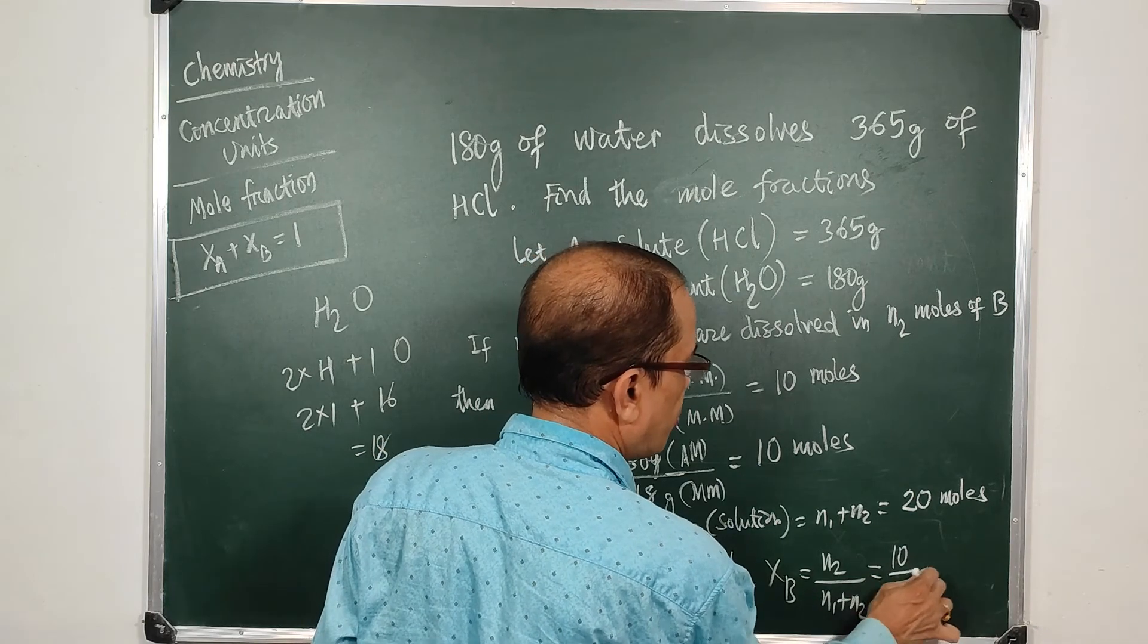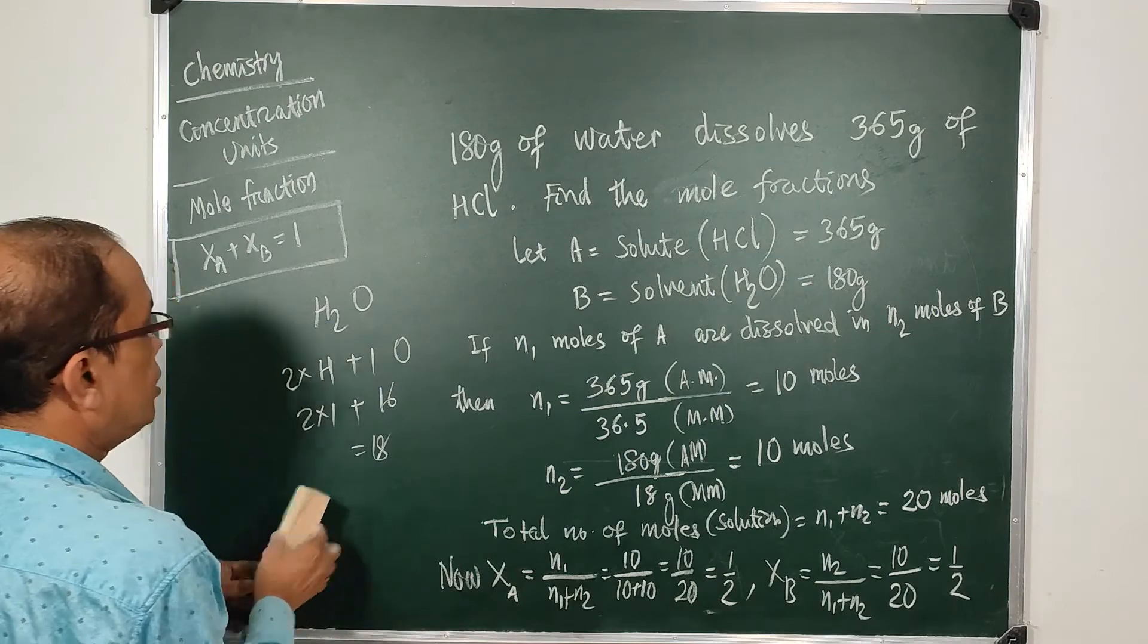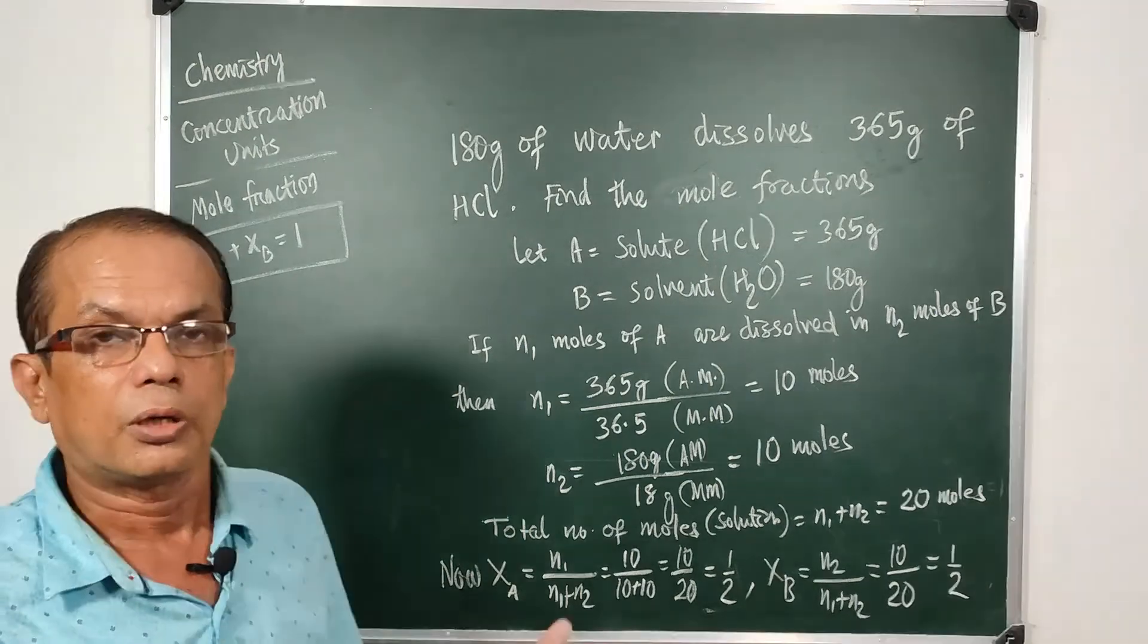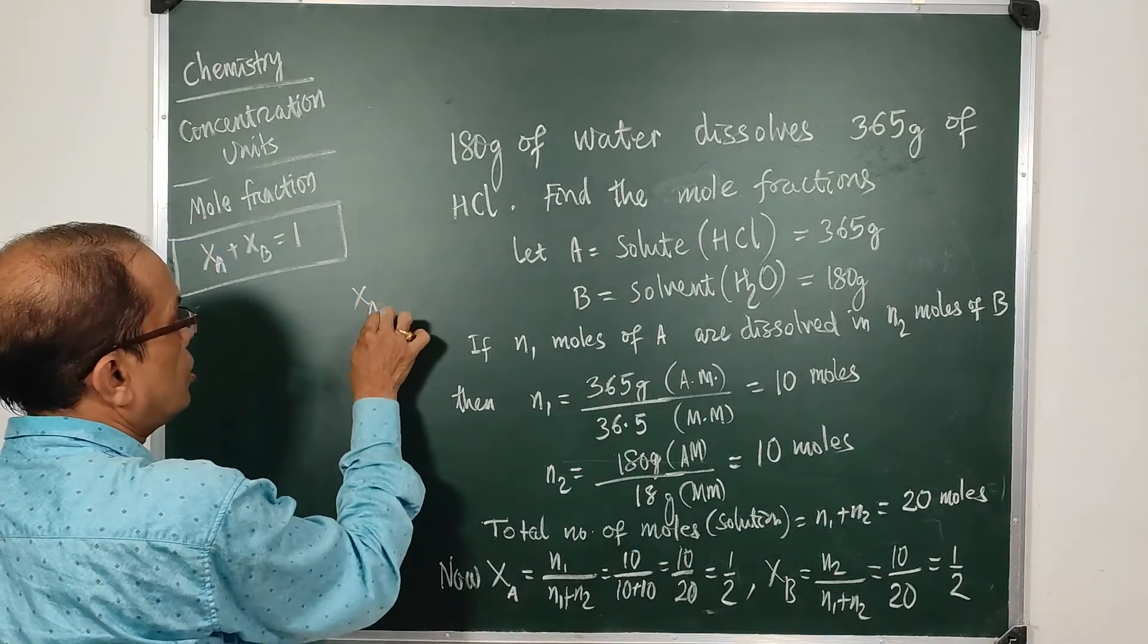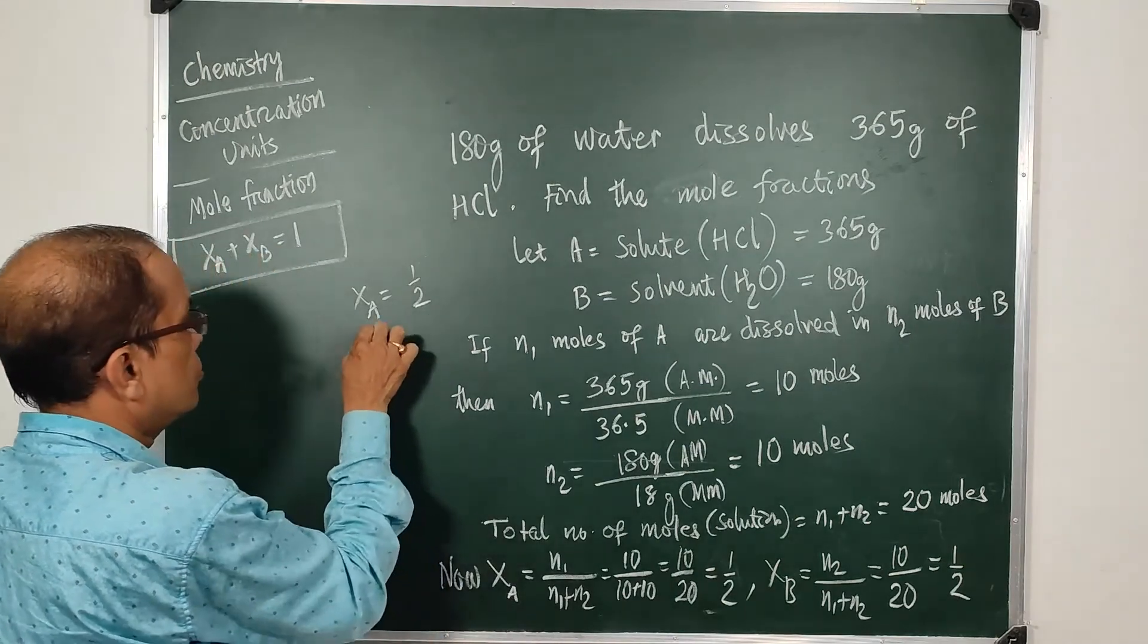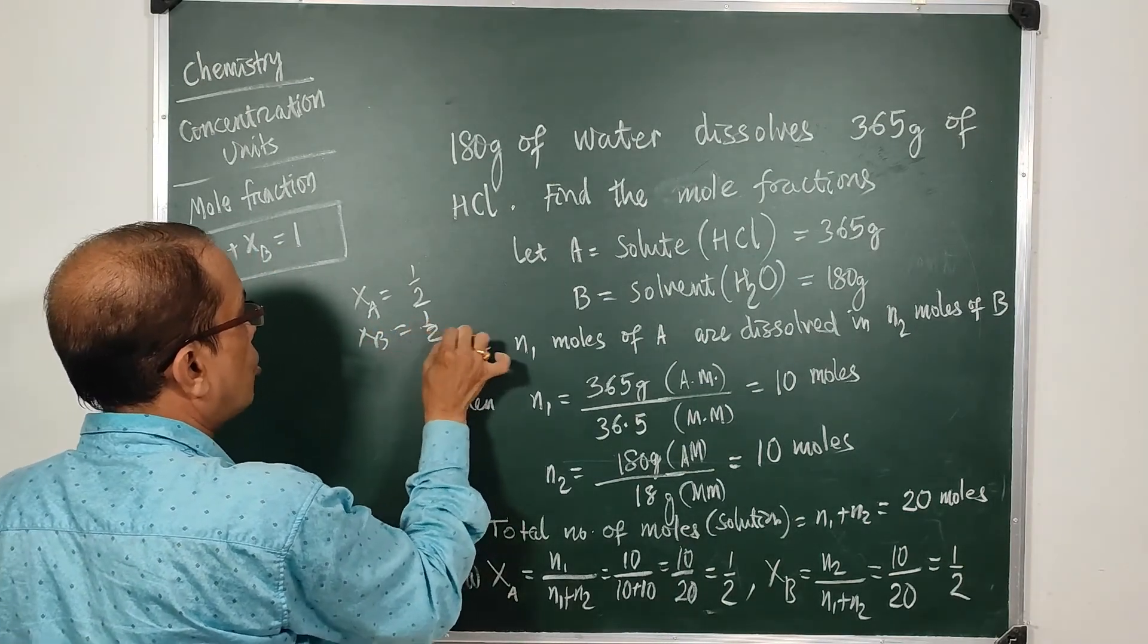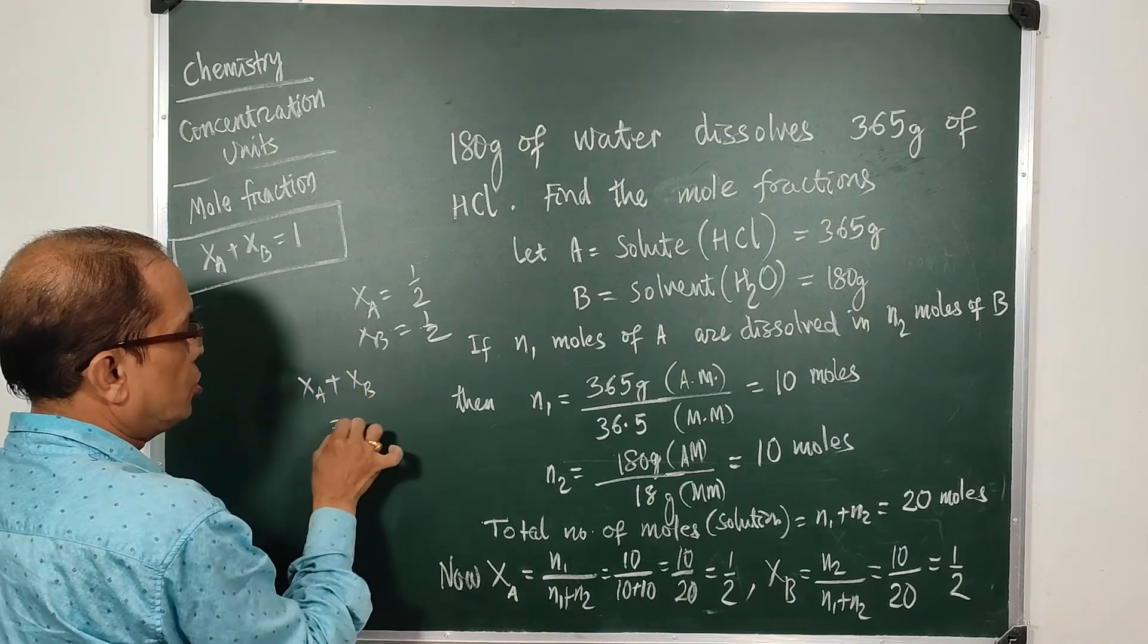Clearly we have seen here that when we add the two mole fractions, the first mole fraction Xa is 1 upon 2 and the second mole fraction Xb is also 1 by 2, so what will be the sum? Xa plus Xb is 1 by 2 plus 1 by 2, which is equal to 1.